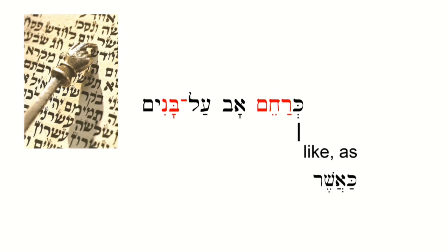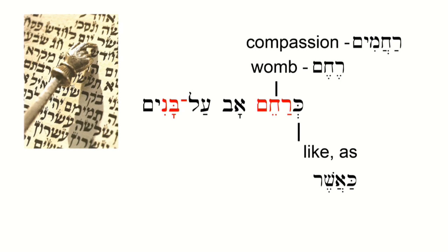Ke is short for ka-asher, meaning like or as. Then we have the father. But let's take the verb next — the verb is racham. When used as a noun it's always in the plural: rachamim. It's also used for the womb of a mother in which a baby grows to be born. Hebrew has these visual images. Rachem means a womb, and rachamim — plural — means compassion.